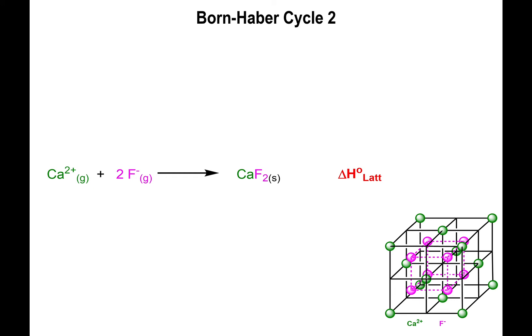Okay, here we go. Second example of the Born-Haber cycle. Now in problems of this sort, one thing you're going to be told for sure is the identity of the salt you want to calculate the lattice enthalpy for. So here you'll be told calcium fluoride—you want to know the lattice enthalpy.